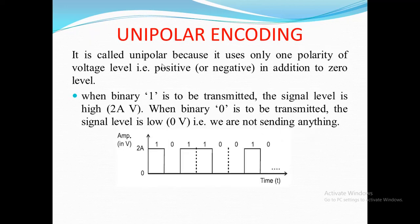Unipolar coding uses only one polarity of voltage level - it can be positive or negative - in addition to a zero level. So we use a zero level and either a positive or negative level. For example, when binary 1 is to be transmitted, we keep the voltage high, and when zero is to be transmitted, the signal level is zero voltage, meaning we are not sending anything. So 1 can also be represented by negative voltage.